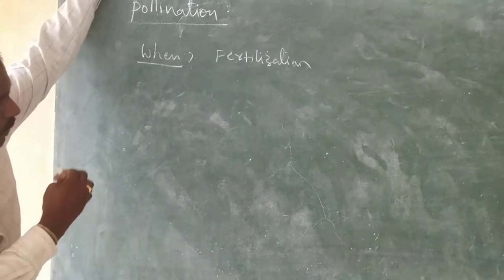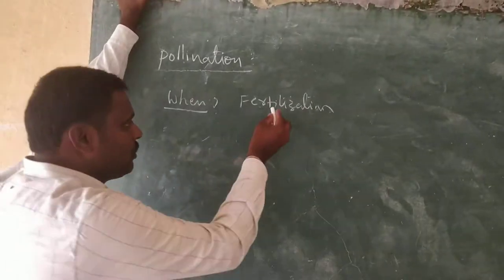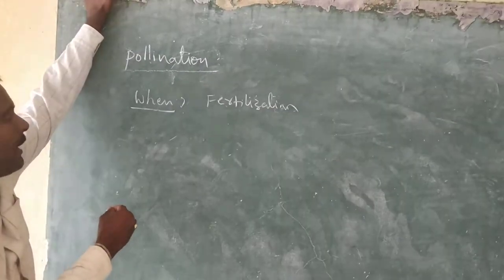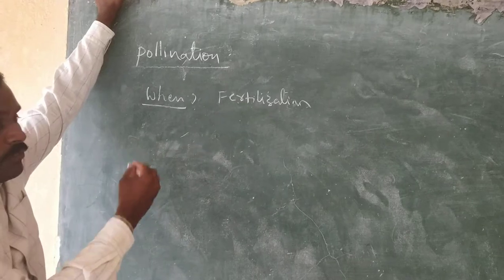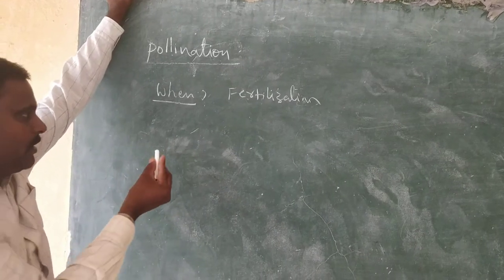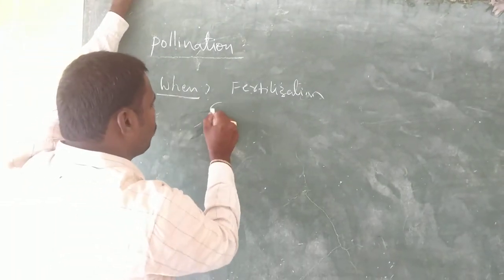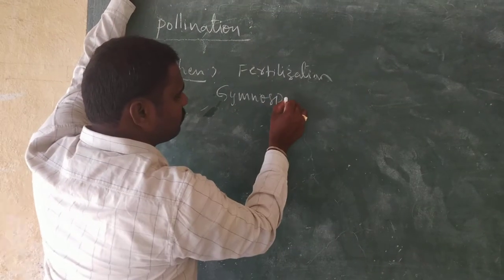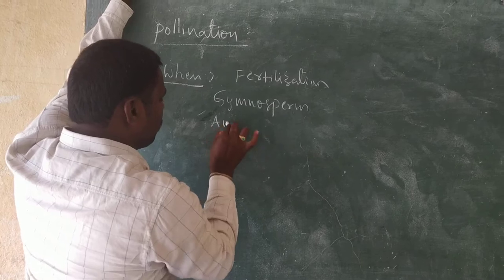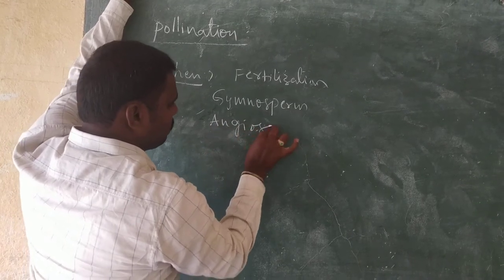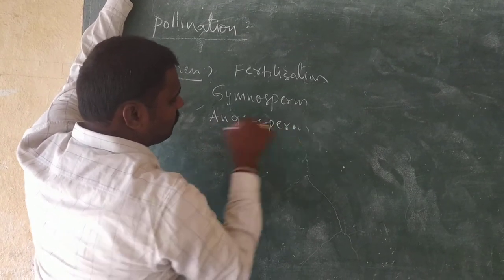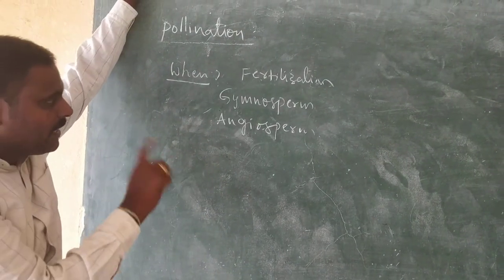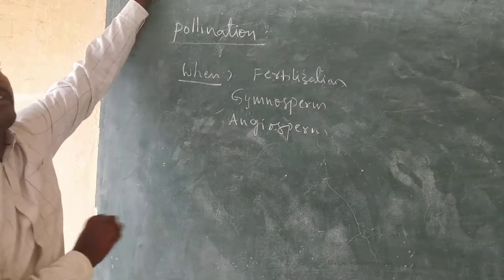Pollination takes place prior to fertilization in the members of gymnosperms and angiosperms.